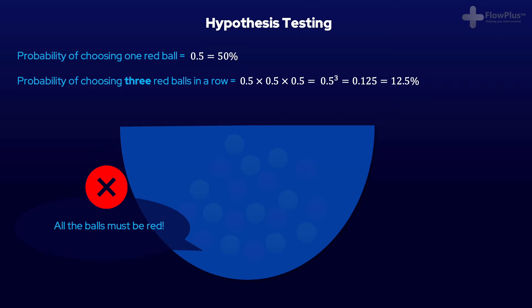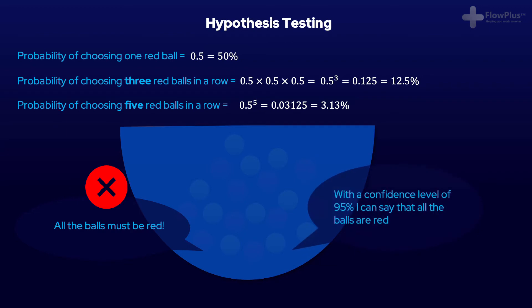Do you think that is statistically significant enough to conclude that it is likely right? I wouldn't say so. However, if you chose five balls in a row and they were all red, then this probability is 3.1%, and I would say the statistical probability is probably significant enough to make that statement. It is much better to make statements like, with a confidence level of 95%, I can say that all the balls are red. By saying it like this, you have stated the possibility that what you have concluded is in fact incorrect, and you have addressed the uncertainty. This is exactly what we're trying to do with hypothesis testing.